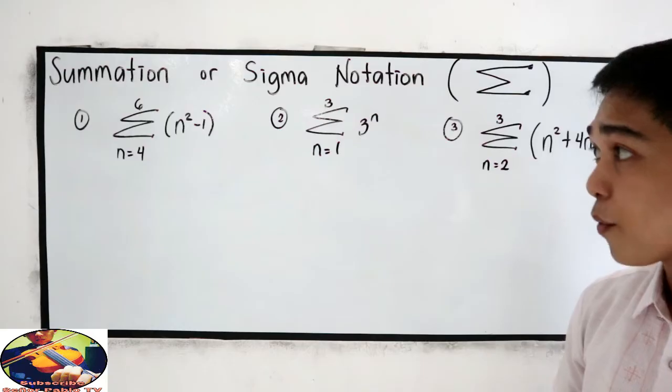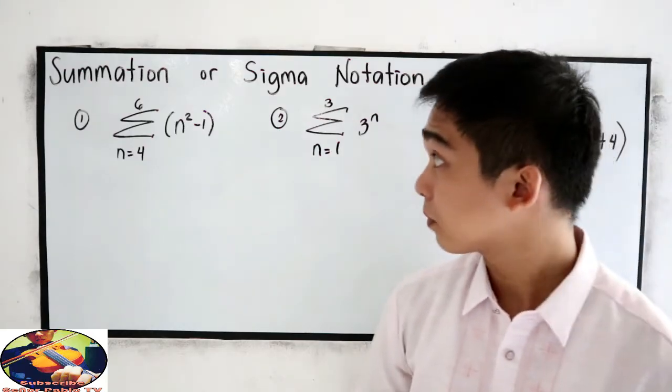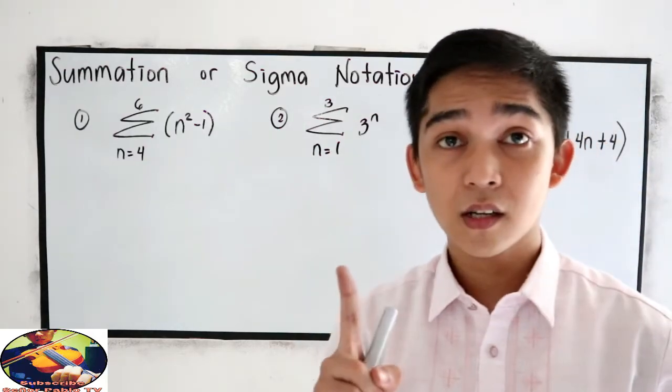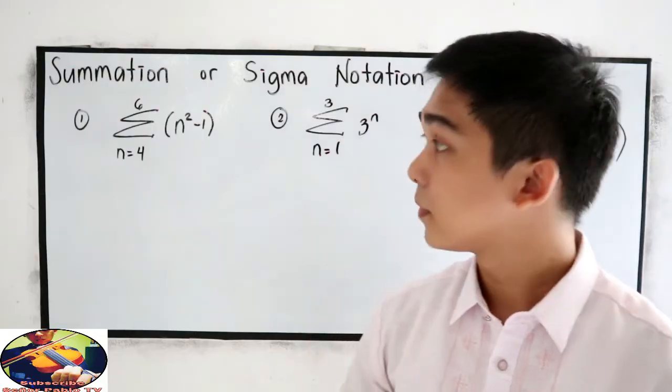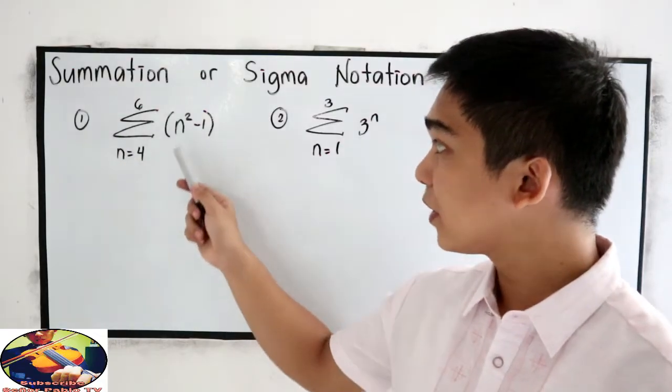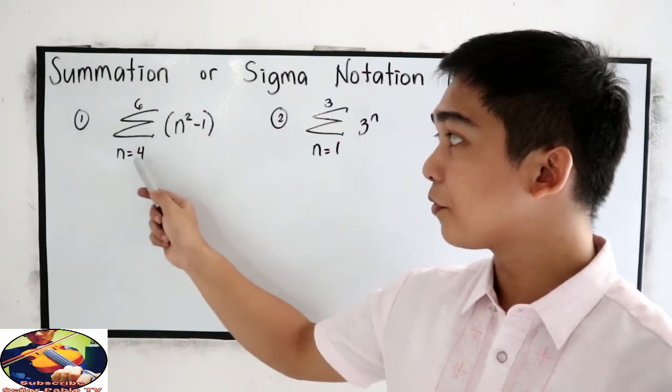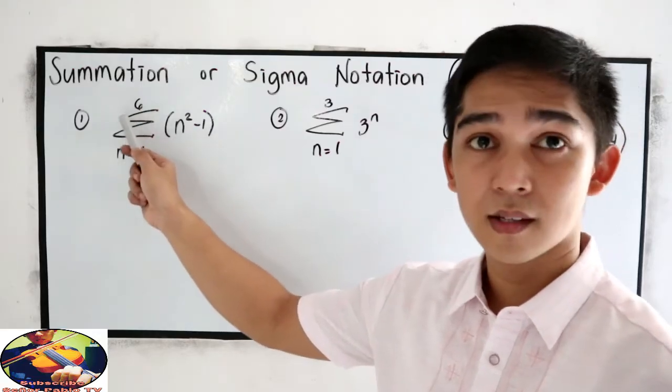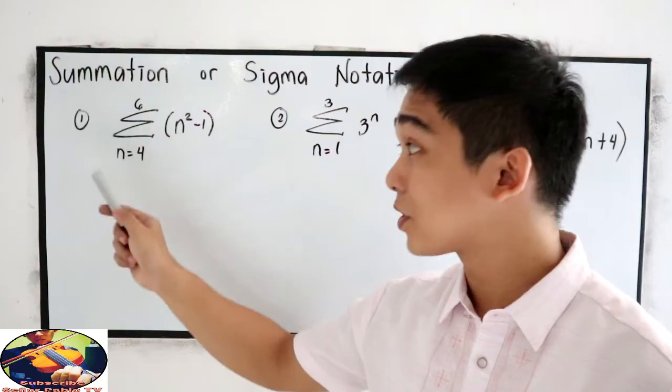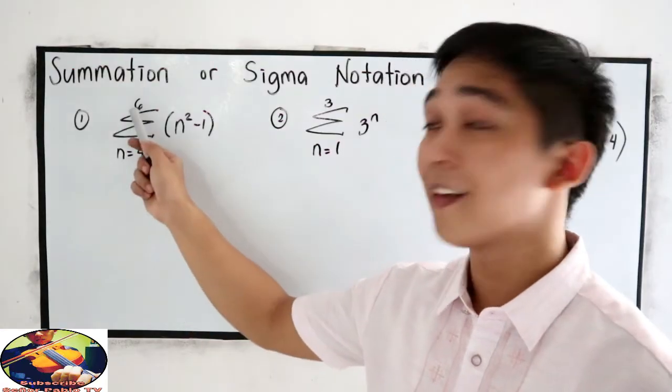Now I will try number 1. First, let us read the given: summation of N squared minus 1, goes from 4 to 6. So we are going to start at 4 and end at 6.